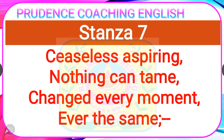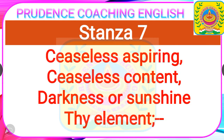Now the seventh stanza: 'Ceaseless aspiring, ceaseless content, darkness and sunshine, thy element.' The poet says that the fountain keeps flowing water upward continuously. It seems very happy and satisfied by the heights the water reaches. Whether it is day or night, the fountain is always happy. It teaches us that like nature, we should always stay happy and satisfied.